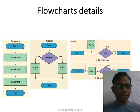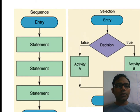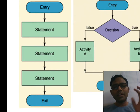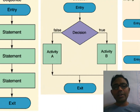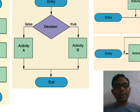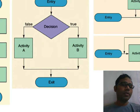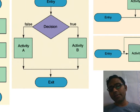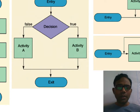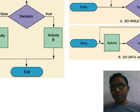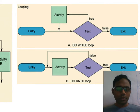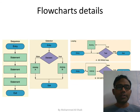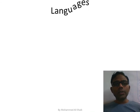A flowchart is a pictorial representation of a step-by-step solution. Symbols: oval = start/end, flow lines = program flow, parallelogram = input/output, rectangle = processing, diamond = conditional statement. Flowchart structures include sequence (entry → statements → exit), conditional (decision with activity A or B based on true/false), and looping (entry-controlled or exit-controlled).